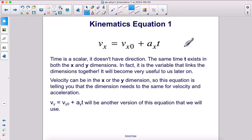Velocity can be in the x or the y dimension. So this equation is telling you that the dimension needs to be the same for velocity and acceleration. Vy equals Vy-naught plus ay times t will be another version of this equation that we will use.